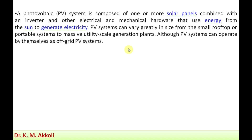A photovoltaic PV system is composed of one or more solar panels combined with an inverter and other electrical and mechanical hardware that use energy from the Sun to generate electricity. These components — solar panels, inverter, and supporting hardware — work together to convert solar energy into usable electricity.